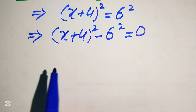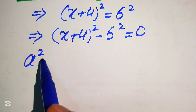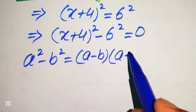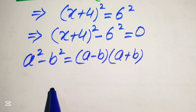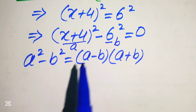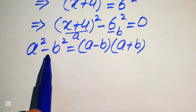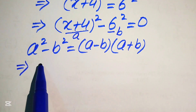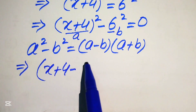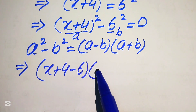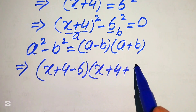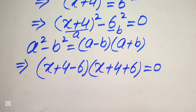We apply the algebraic identity a² − b² = (a − b)(a + b). Here, a = (x + 4) and b = 6. Applying the formula, the equation becomes (x + 4 − 6)(x + 4 + 6) = 0.